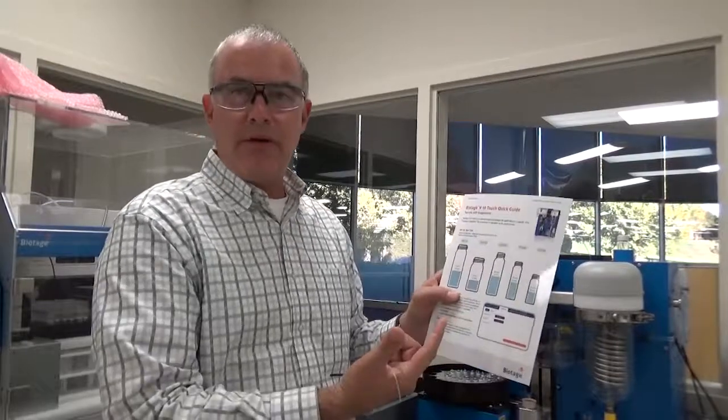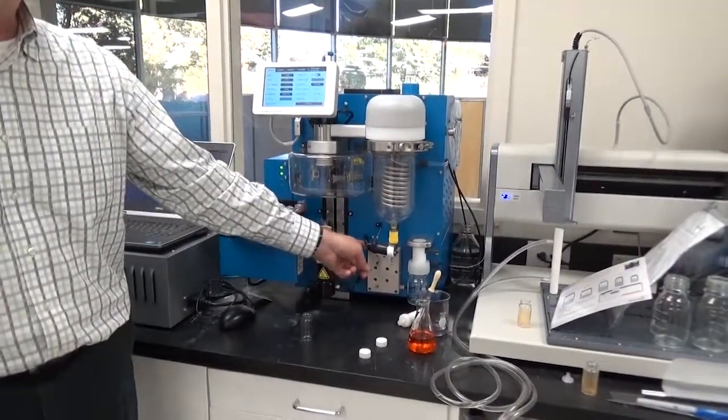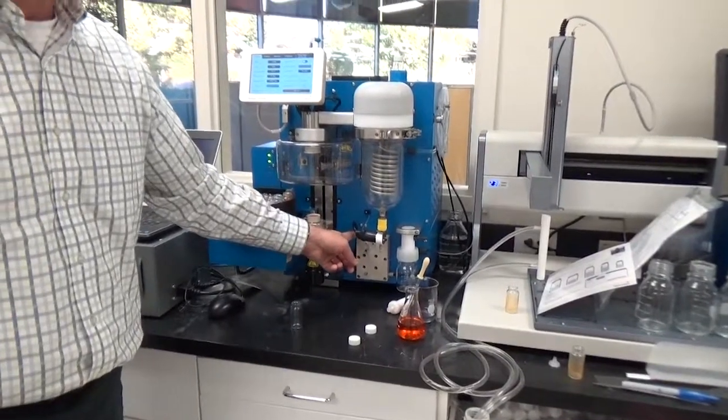Suppose you have more than 8 mils of solvent or 8 mils of reaction products to dry down. What do you do? Well, one of the options is this device right here, which is our solvent manager device. It's a pump with a bunch of valves that are controlled here within the V10 itself.